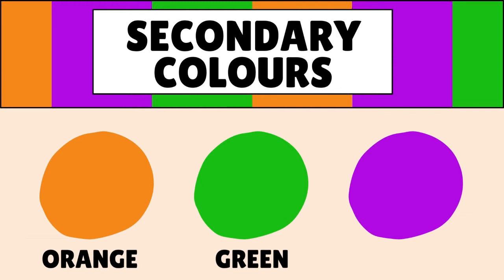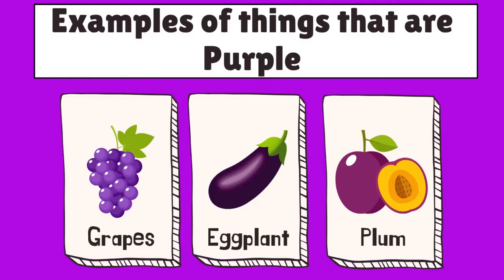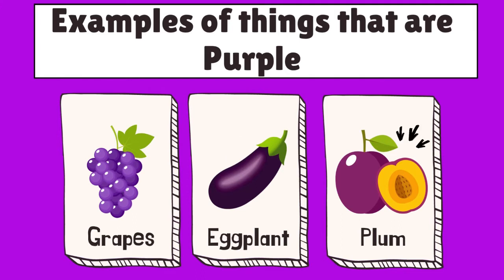Great! Now we have reviewed two secondary colors, which are orange and green. Now let's identify the next color. Can anyone guess what color the arrow is pointing? That's right, it's the color purple. And here are examples of things that are purple in color. First, we have some grapes. Next, we have an eggplant. And last, we have a plum.